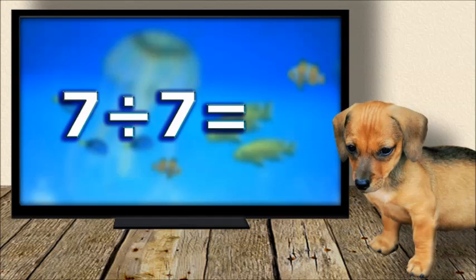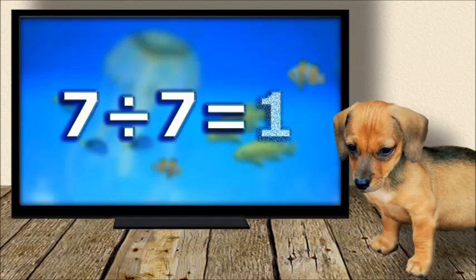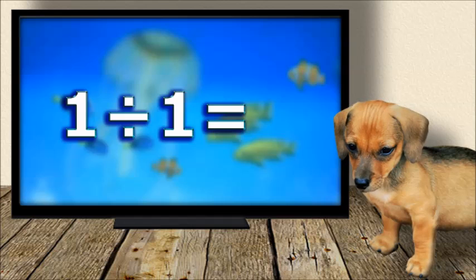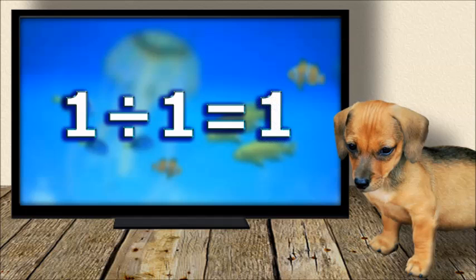Seven divided by seven equals one. One divided by one equals one.